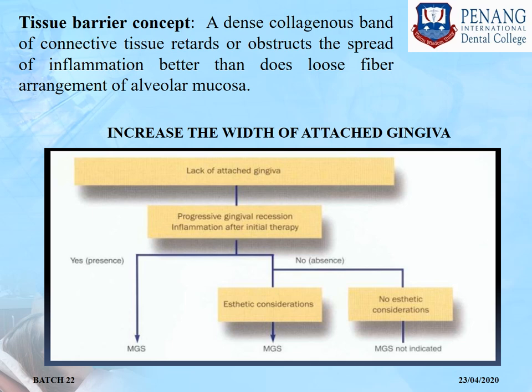Then comes the tissue barrier concept: a dense collagenous band of connective tissue retards or obstructs the spread of inflammation better than does the loose fiber arrangement of alveolar mucosa. This flow chart shows when to perform mucogingival surgery: if a patient has lack of attached gingiva with progressive gingival recession and inflammation after initial therapy, mucogingival surgery is indicated.